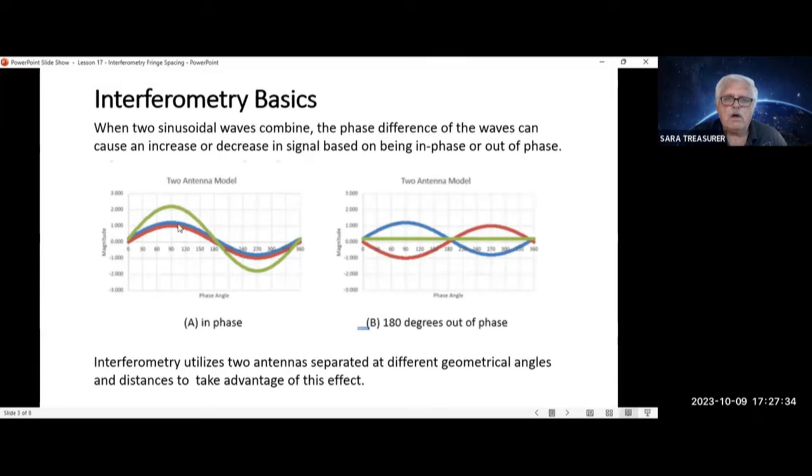If these are 180 degrees out of phase, they look like this, the red and the blue, and the final added output is zero. So interferometry utilizes two antennas separated at different geometrical angles and distances to take advantage of this effect.